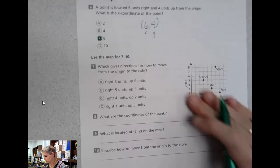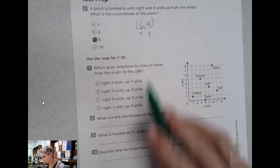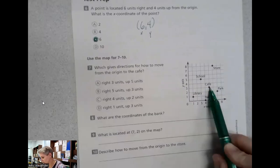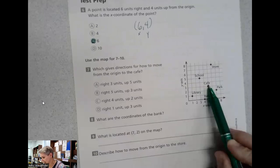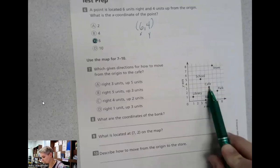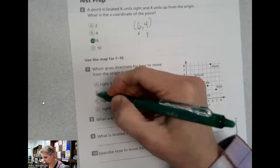Using this map, which gives directions for how to move from the origin to the cafe. Here's the cafe. Origin to the cafe, I'm going to go right five units, up three units. It's going to be letter B.